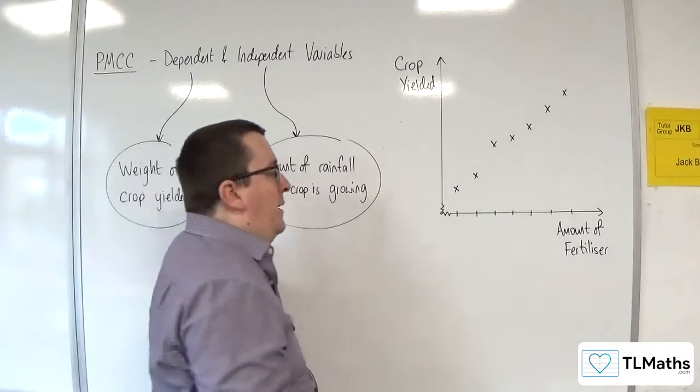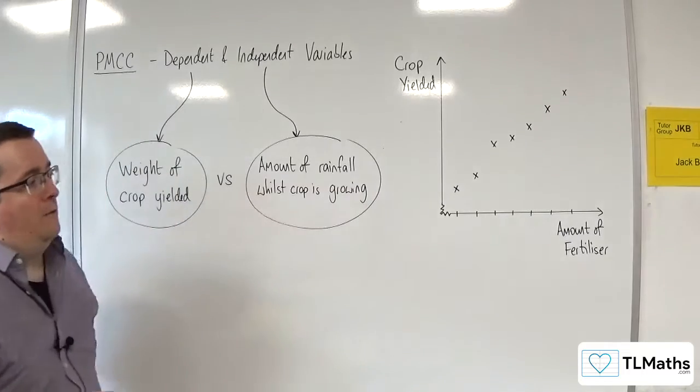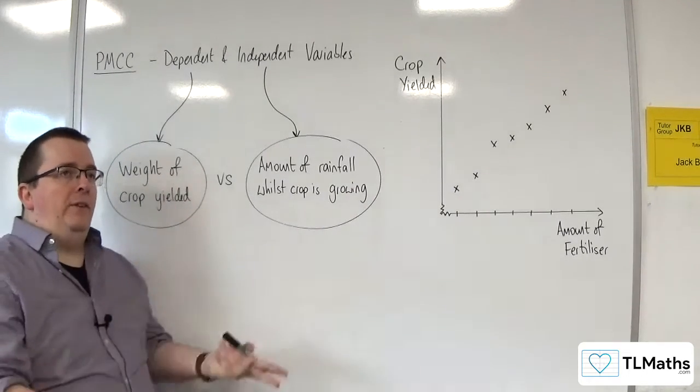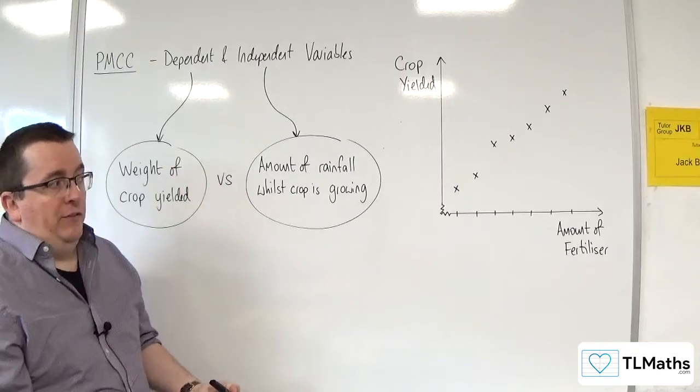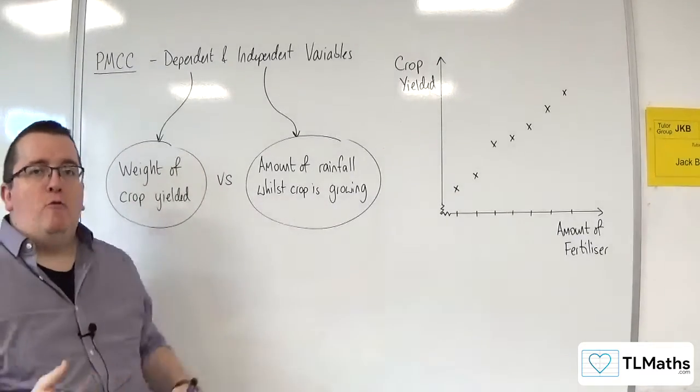So this might be a liter, two liters, three liters. It depends on the amount of crop that you want to produce. But that's the idea behind it. I am controlling how much and at regular intervals.